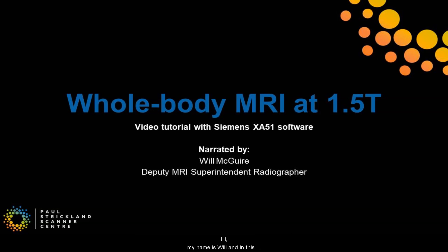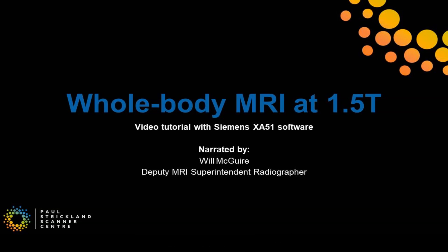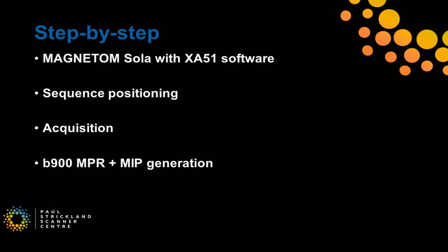Hi, my name's Will and in this video we're going to look at how to perform a whole body MRI at 1.5T using the Siemens XA51 software. I'll talk you through sequence positioning, scan acquisition, and creation of B900 NPRs and MIPs.